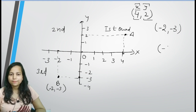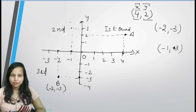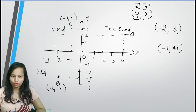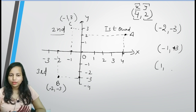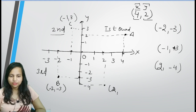Ab agar humare paas hai (-1, +3) — toh x-axis pe minus 1 yeh raha, aur y-axis pe 3 yeh raha. Toh yahan pe hoga minus 1, aur 3 — toh yeh hai object C, jiski position hai minus 1, 3 — aur yeh kaunsa quadrant hai? This is the second quadrant. Now next, if we have (2, -4) — toh x-axis pe 2 yeh raha, aur y-axis pe minus 4. Yeh is position pe intercept karega — 2, minus 4. Toh yeh kaunsa quadrant hai? This is the fourth quadrant.